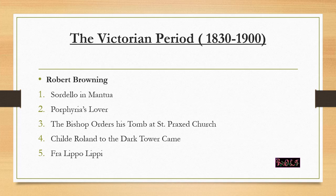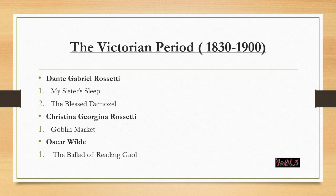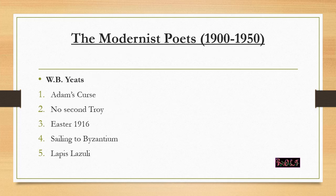From Robert Browning, we have Sordello, In a Gondola, Porphyria's Lover, The Bishop Orders His Tomb at Saint Praxed's Church, Childe Roland to the Dark Tower Came, and Fra Lippo Lippi. The three most important poems — where questions keep repeating — are Porphyria's Lover, The Bishop Orders His Tomb, and Fra Lippo Lippi. We also have Dante Gabriel Rossetti with My Sister's Sleep and The Blessed Damozel, Christina Rossetti with Goblin Market, and Oscar Wilde with The Ballad of Reading Gaol.